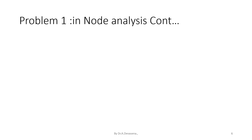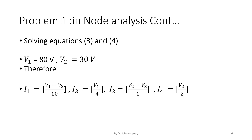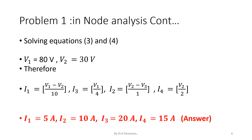Solving equations 3 and 4, we obtain the value of V1 as 80 volts and the value of V2 as 30 volts. With the help of these two values, we can easily determine the values of I1, I2, I3, and I4. The current I1 is equal to 5 amps. Current I2 is equal to 10 amps. Current I3 is equal to 20 amps. And the current I4 is 15 amps.